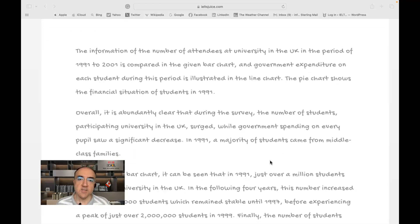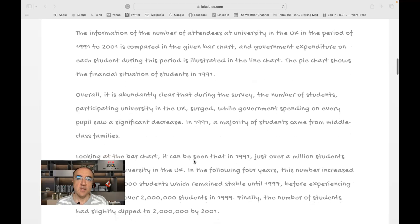Overall it is abundantly clear that during the survey the number of students, comma, participating in university. This comma is not necessary. We need to define who the students are. Which students? Because of that we need defining relative clause. And this one is a contracted form. So it's like students who participated at university in the UK, we contracted it into participating. We don't need a comma here. So the number of students participating at university in the UK, surged.